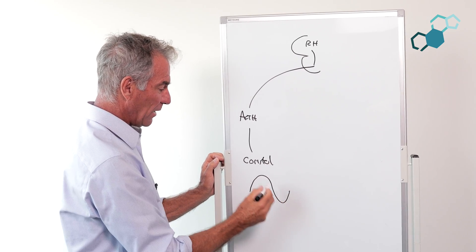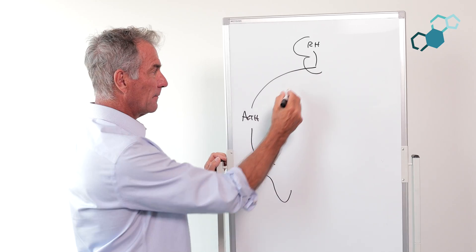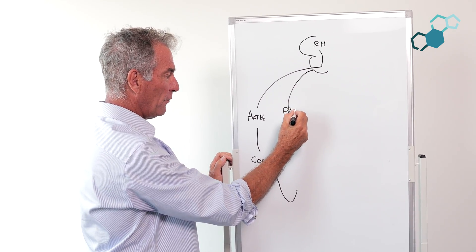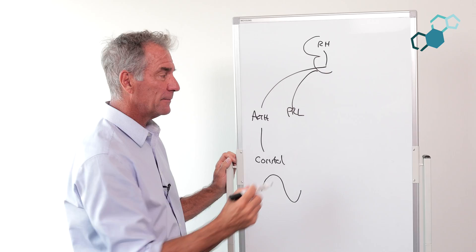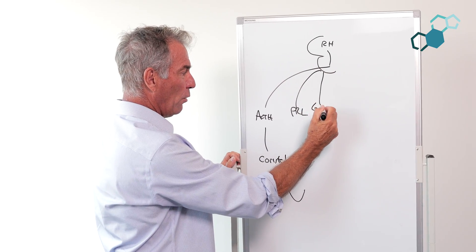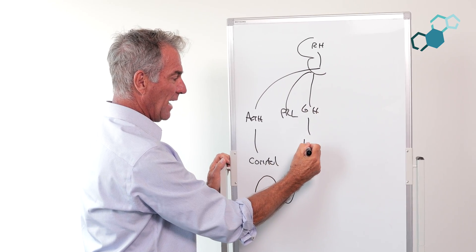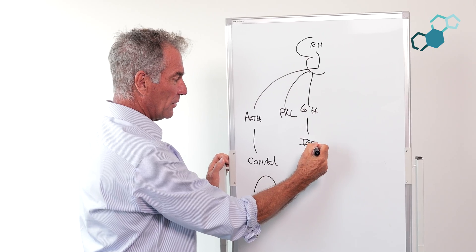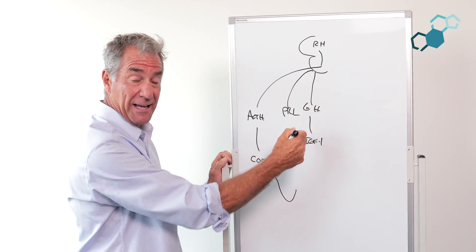Prolactin for milk for the mothers, also goes up with intimacy. Growth hormone makes a thing called IGF-1, which makes cells divide and stay strong. We lose that with age.